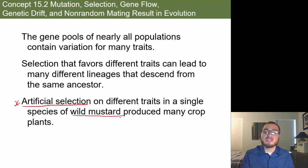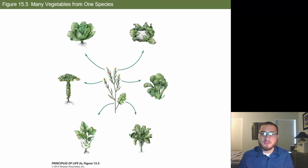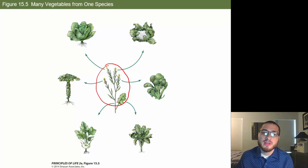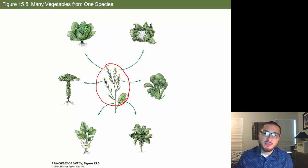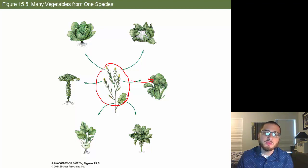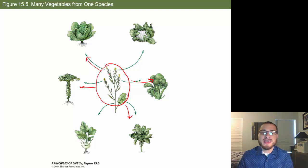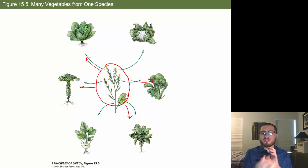Artificial selection on different traits in a single species — like wild mustard or dogs — has produced many different varieties. Wild mustard was just a weed, but over time people selected for different things. One group made the leaves bigger; another found a mutation with large heads and kept breeding for bigger heads, eventually producing broccoli. Others selected for a leafy bulb that grew larger and larger, eventually producing cabbage.